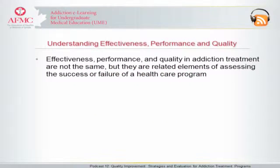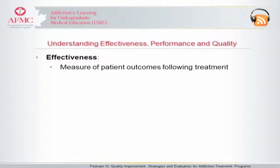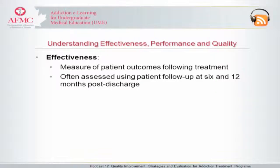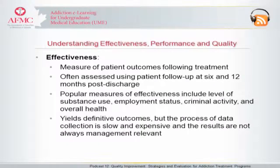Effectiveness, performance, and quality in addiction treatment are not the same, but they are related elements of assessing the success or failure of a health care program. Effectiveness is a measure of patient outcomes following treatment, often assessed using patient follow-up at 6 and 12 months post-discharge. Popular measures of effectiveness include level of substance use, employment status, criminal activity, and overall health. Effectiveness yields definitive outcomes, but the process of data collection is slow and expensive, and the results are not always management relevant.